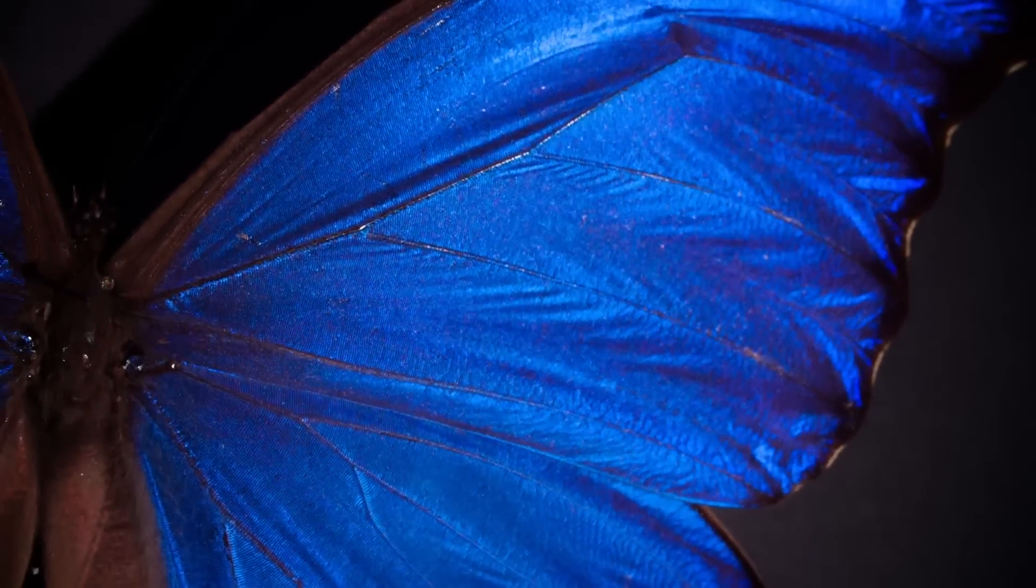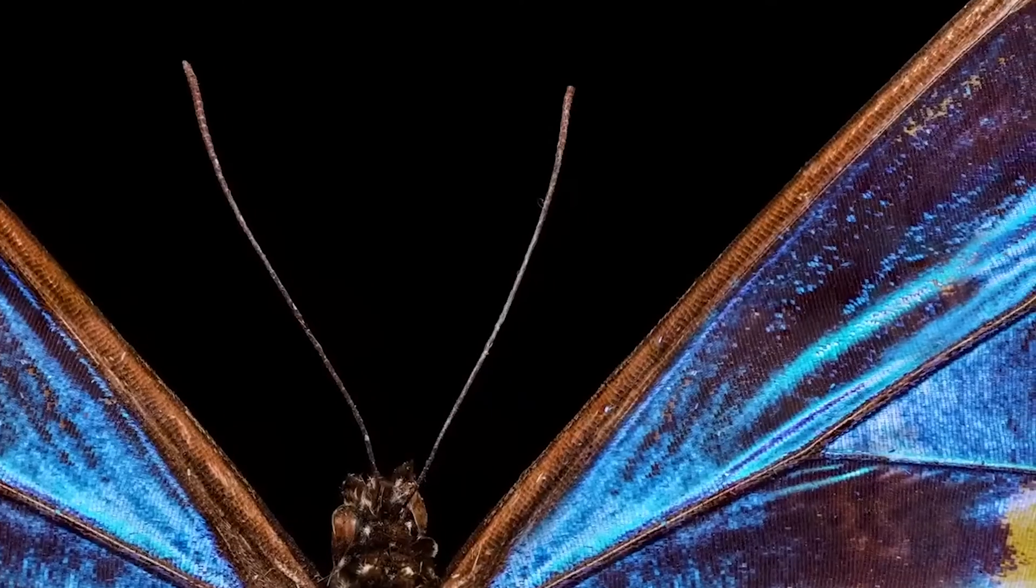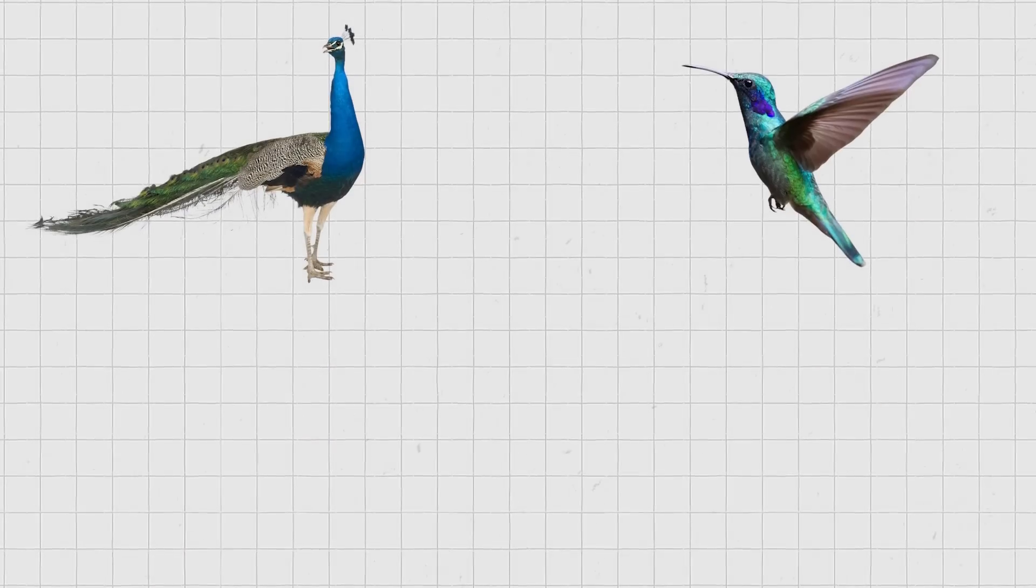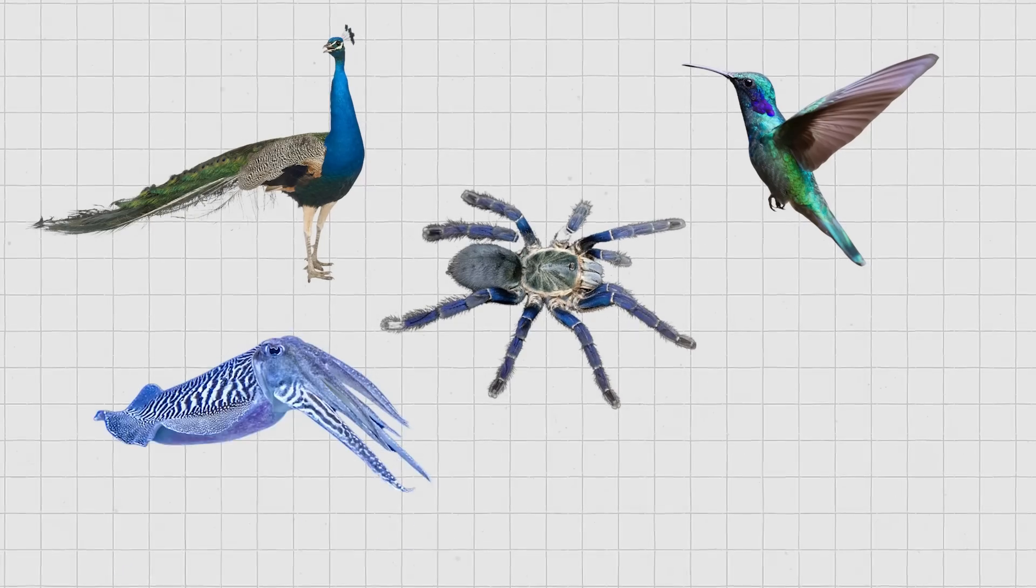This particular set of wavelengths is amplified through constructive interference. And as this color comes from structure rather than from pigmentation, even when the blue morpho butterfly is dead when pigments otherwise would have faded, its wings will still reflect the same brilliant blue. This mechanism for color creation is reasonably common in nature. We also see it in the peacock, the hummingbird feathers, even some spiders, squid, and octopus species.